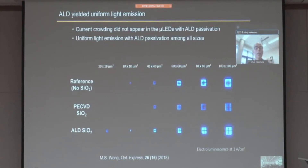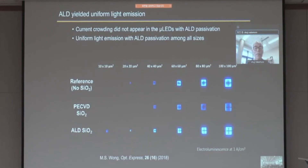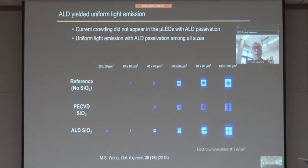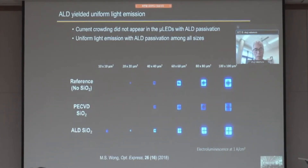You can see this photograph. If we use no sidewall treatment — no passivation, the reference chip — and the chip size is smaller than 14 microns, the emission drops significantly. At 10 microns, there is no emission at all. When using PECVD, at 14 microns there is still lower light emission. But when we use atomic layer deposition — silicon dioxide deposition using ALD — even at 10 microns, emission is still coming. So you can understand how important sidewall passivation is when using ALD.